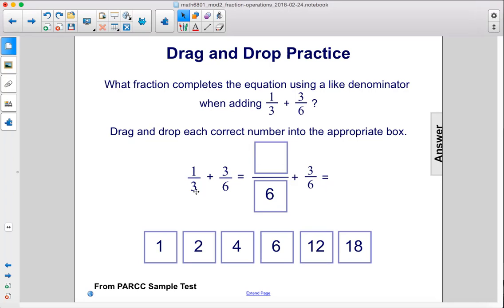Well, in order to get 6, you would have multiplied 3 by 2. So we have to then multiply the numerator by 2, and we get 2. So 2/6 + 3/6 gives us 5/6.